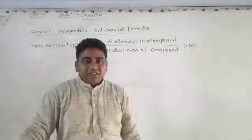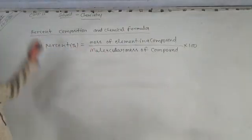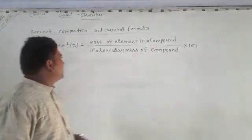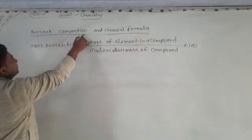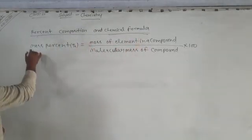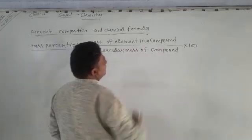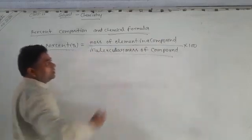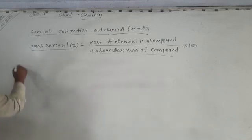My dear students, good morning. I'll explain this topic: percent composition and chemical formula. The formula for mass percent is equal to mass of element in compound upon molecular mass of compound into hundred. Let me explain this with a simple example.